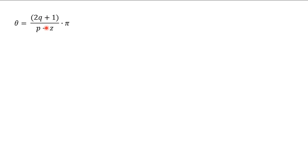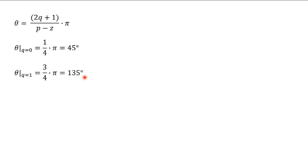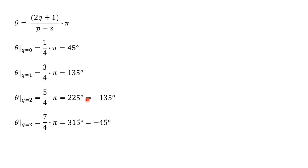Putting Q = 0: θ = (1/4)π = 45°. Putting Q = 1: θ = (3/4)π = 135°. Putting Q = 2: θ = (5/4)π = 225°, which is also equal to −135°. Putting Q = 3: θ = (7/4)π = 315°, which is also equal to −45°. So the four asymptote angles are 45°, 135°, −135°, and −45°.